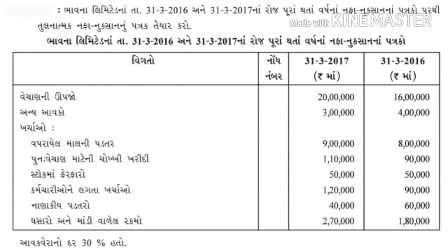હવે બીજો/ચોથો દાખલો - ભાવના/પાવના લિમિટેડ - 31/3/2017ના નફાનુકશાન - 2016 અને 2017ના નફાનુકશાનના પત્રકની માહિતી. વિગત - 2017 (ચાલુ વર્ષ) અને 2016 (પાછલું વર્ષ) - ત્યારબાદ વેચાણ - ચોખી ખરીદી.